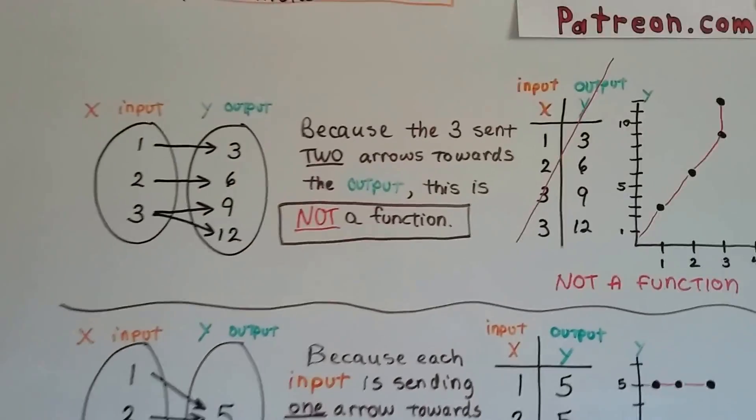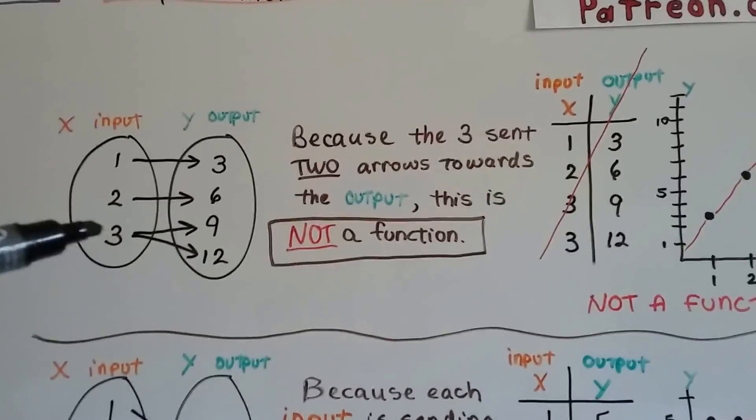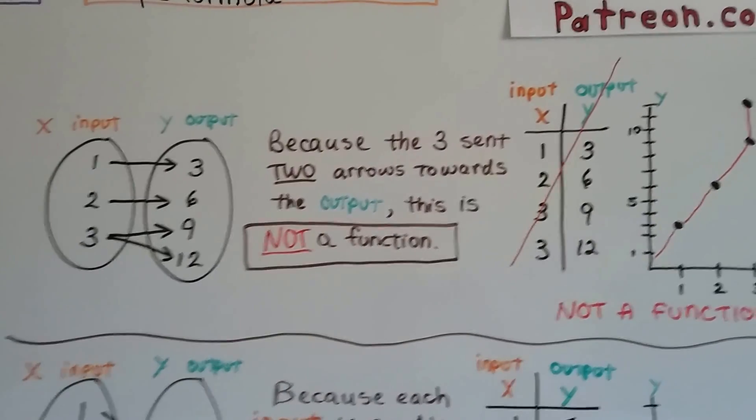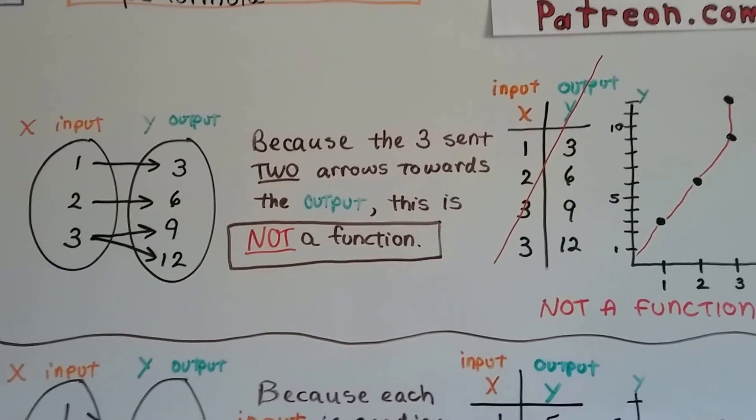Now take a look at this one. Look what this 3 is doing. He's sending two arrows. So that's not a function. Because the 3 sent two arrows towards the output, this is not a function.